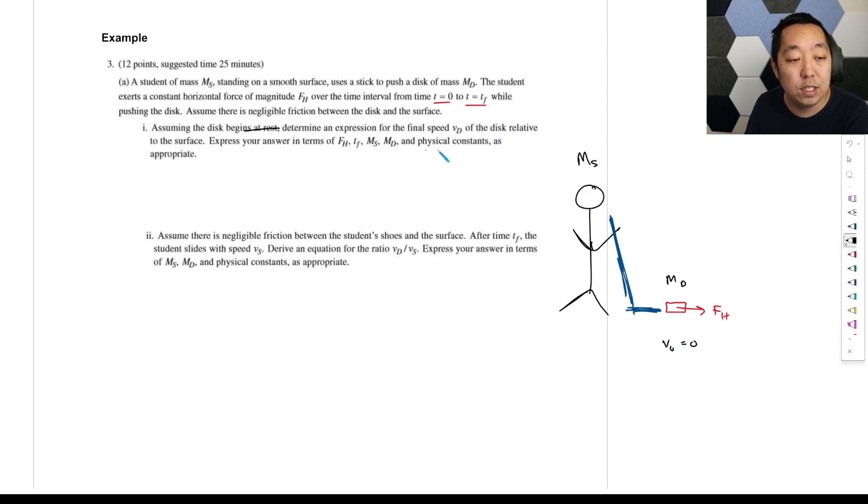So he's going to apply FH to it over the time interval from 0 to TF while pushing the disc. Assume there's negligible friction with the disc on the surface. Assuming the disc begins at rest, so the initial velocity here is 0. Determine expression for the final speed of the disc relative to the surface. Express your answers in terms of this. So this is going to be impulse is the change in momentum, will be a lot easier. Again, you could do kinematics like we did before, but this would be a little bit simpler.